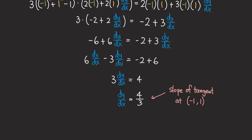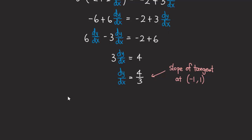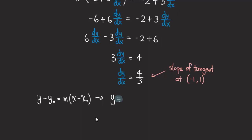Now we can write the equation of the tangent line using point-slope form: y - y₀ = m(x - x₀). The point is (-1, 1) and the slope m = 4/3. Plugging in: y - 1 = (4/3)(x - (-1)), which gives y - 1 = (4/3)(x + 1).